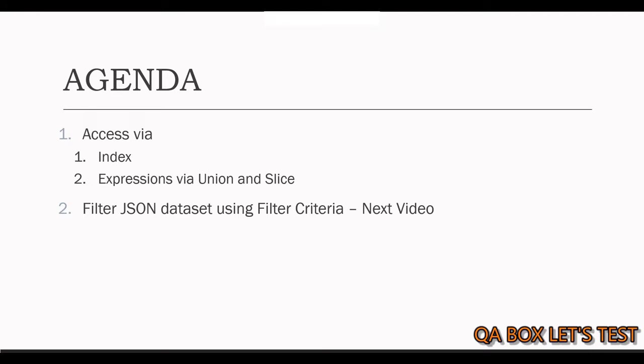The index approach works really well with primitive types like string, number, boolean, and null. However, it is not advised to use index when array items are of type object or array. In such cases, we filter the JSON data set using filter criterias. I will cover this topic in a separate video to keep this video short.